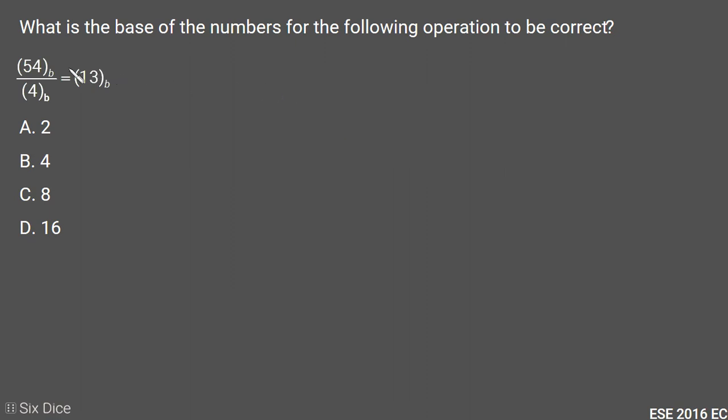In this question we have an unknown base division and its result, and we need to find the correct base number b. To find the correct base number b, first we will convert our unknown base b into decimal, then we will perform the division and equate with whatever value we get in decimal to find the value for b.